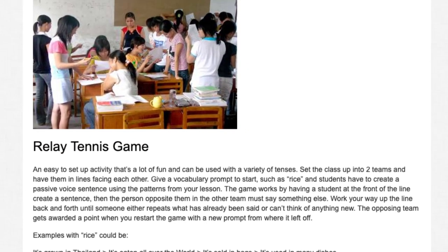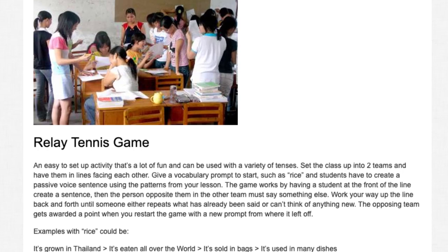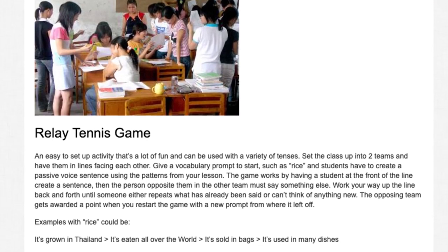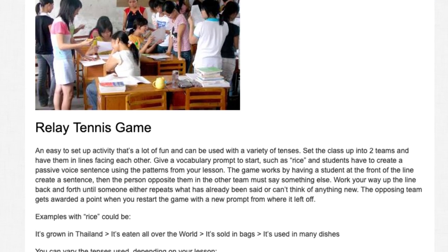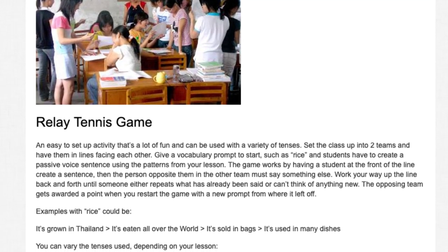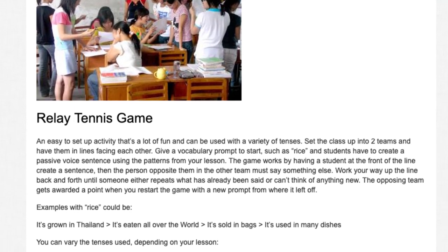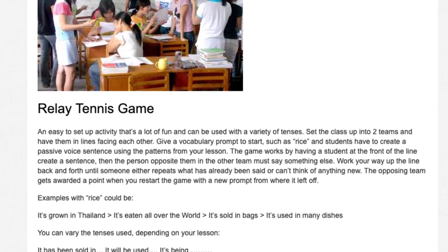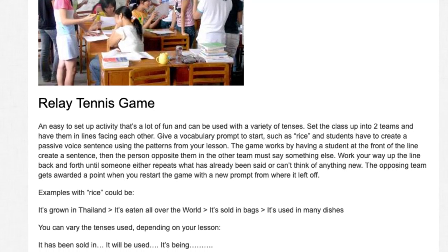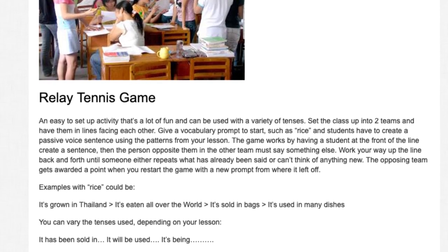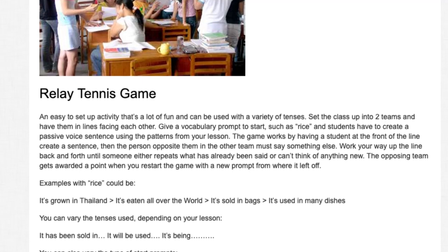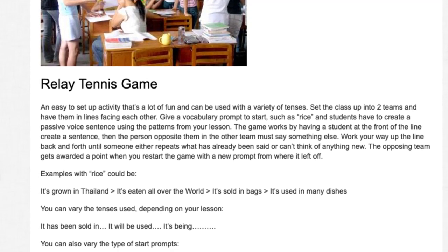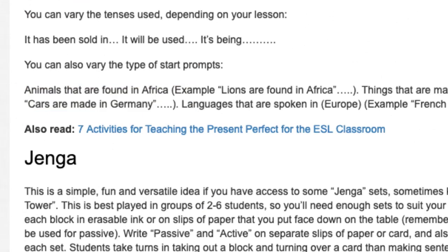Relay Tennis Game: An easy-to-set-up activity that's a lot of fun and can be used with a variety of tenses. Set the class up into two teams and have them in lines facing each other. Give a vocabulary prompt to start, such as 'rice,' and students have to create a passive voice sentence using the patterns from your lesson. The game works by having a student at the front of the line create a sentence, then the person opposite them in the other team must say something else. Work your way up the line back and forth until someone either repeats what has already been said or can't think of anything new. The opposing team gets awarded a point, then you restart the game with a new prompt. Examples with rice could be: 'It's grown in Thailand.' 'It's eaten all over the world.' 'It's sold in bags.' 'It's used in many dishes.'